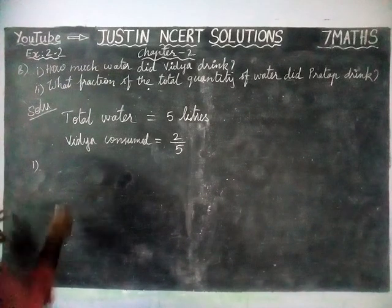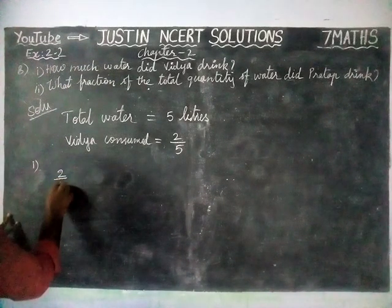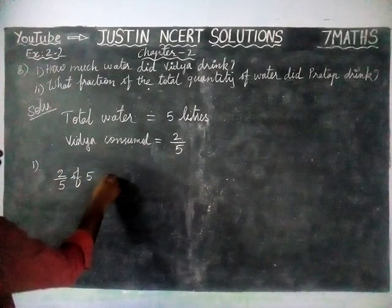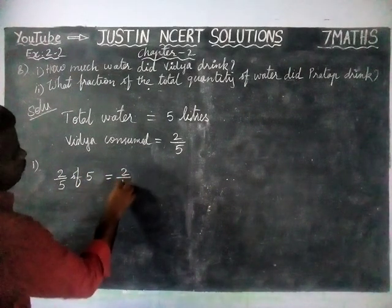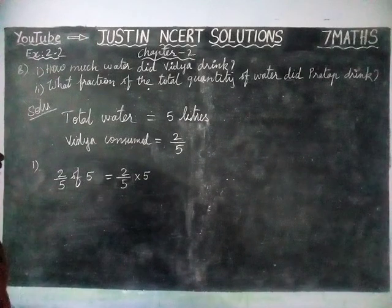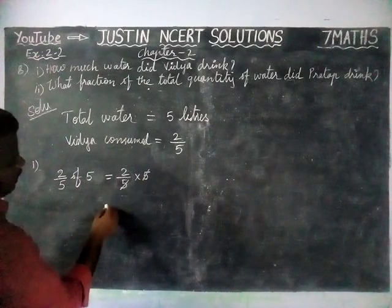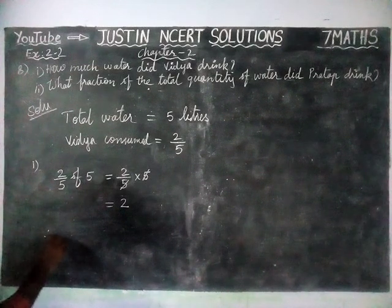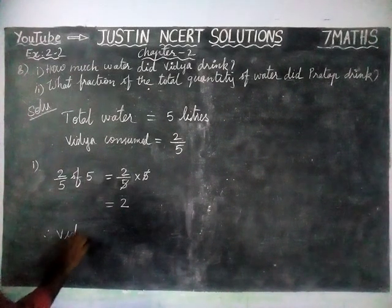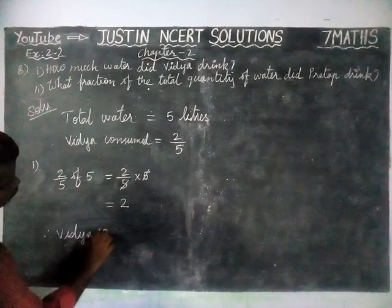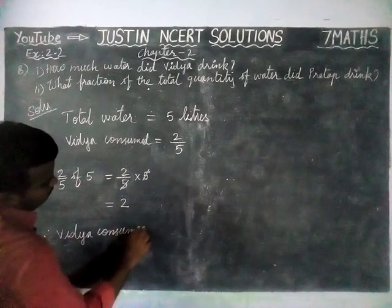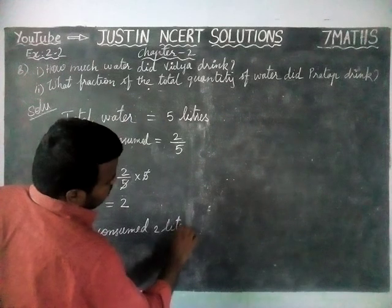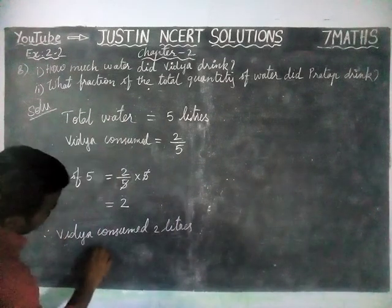How much water did Vidya drink? Now we are going to find 2 by 5 of 5 litres of water, which is equal to 2 by 5 into 5. Now we can cancel 5 — the 5s are cancelled. The remaining is 2. Therefore, Vidya consumed 2 litres of water.